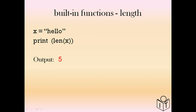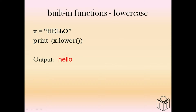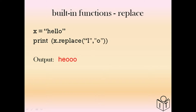There are several features that can change the text. Upper will change the letters to uppercase. Lower will change the letters to lowercase. Replace — the word hello has two L's and they'll be replaced by the letter O, so the output is H-E-O-O-O.